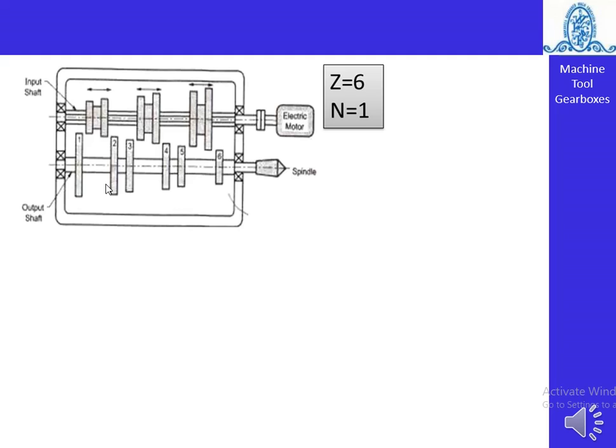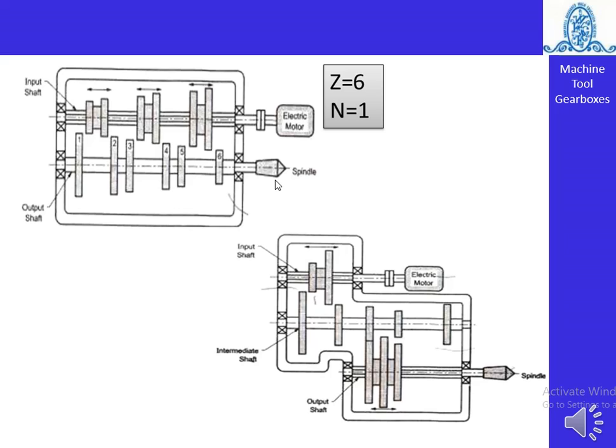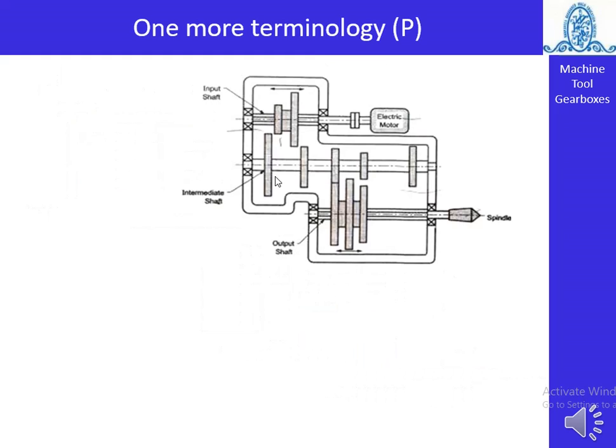When Z equals six, six gears are available on both the input and output shafts. The difference from the previous diagram is that a two-gear cluster is used at the input shaft and individual gears at the output shaft. The electric motor is the input and the spindle — as in a lathe machine — is the output. When Z equals six and N equals two, there are two stages.